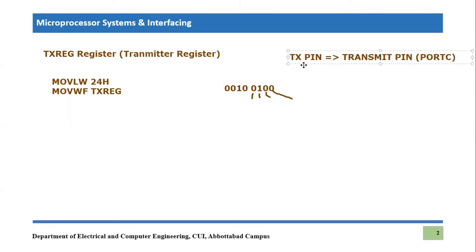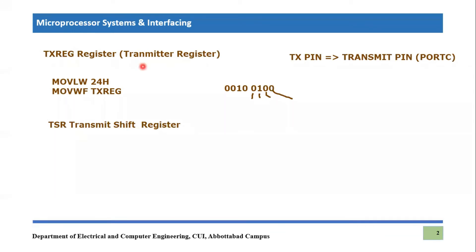Here we come to another important register related to transmission — the Transmit Register or Transmitter Register. That register is known as TSR, or Transmit Shift Register. Once you have placed the value you want to transmit — for example, 0x24 — into the working register and then into the transmit register, that value in the transmit register will automatically, in a background process, transfer to the TSR register. TSR stands for Transmit Shift Register.